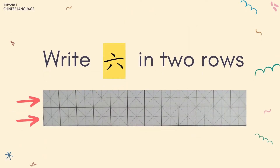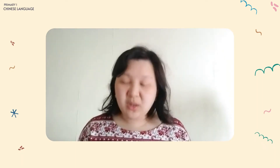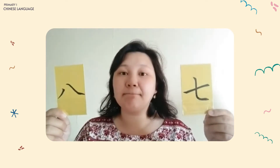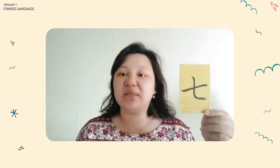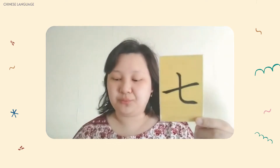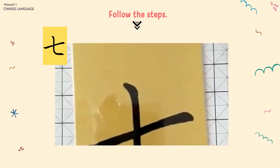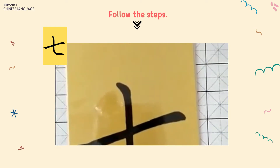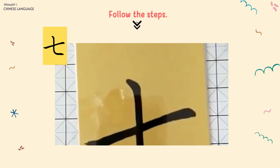Now let's try to write it. Okay, if you have done with Leo, now tell me which one is Chi? Yes, it's this one. After this, let's continue to write Chi in your Chinese writing book. Now this is how to write Chi. Chi is number seven.